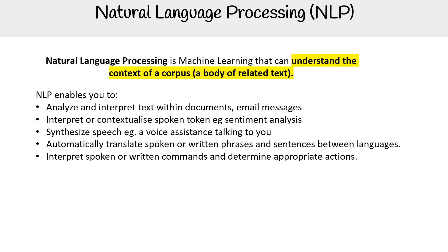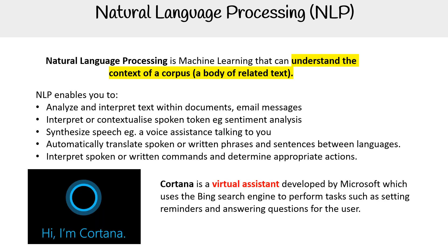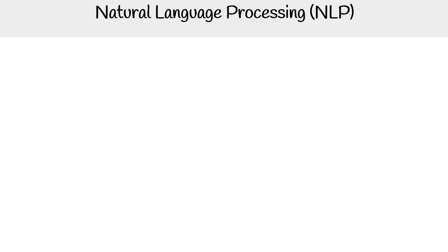A very famous example of a virtual assistant for Microsoft is Cortana. It uses the Bing search engine to perform tasks such as setting reminders and answering questions for the user. If you're on a Windows 10 machine, it's very easy to activate Cortana by accident.